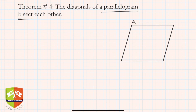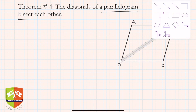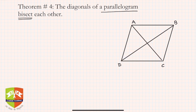Let's try to prove this. Let me take parallelogram ABCD and draw the diagonals, since that's what we have to deal with. This is diagonal BD and this one is AC. Let the point of intersection be called O.